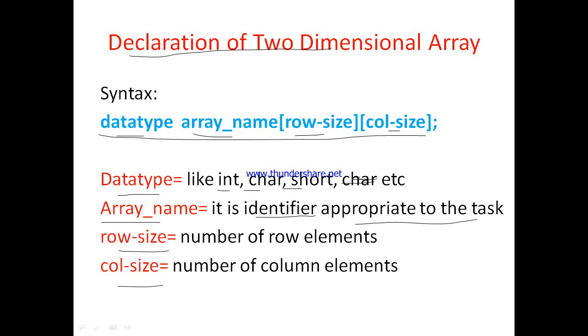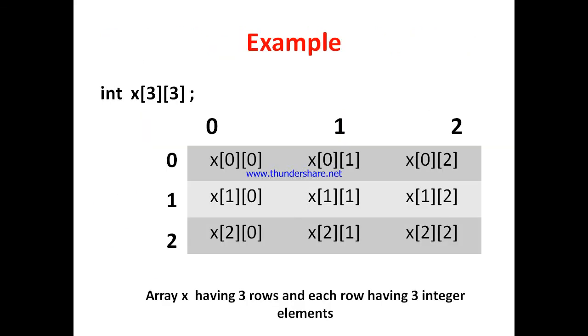Now let us see the example. Here first example: int x[3][3]. Int is the data type, x is the array name, 3 is the number of rows and 3 is the number of columns. Now here 0, 1, 2 these are the columns. And here 0, 1, 2 these are the number of rows.